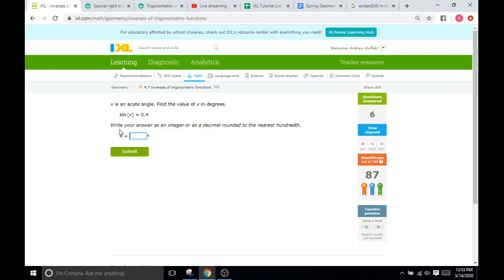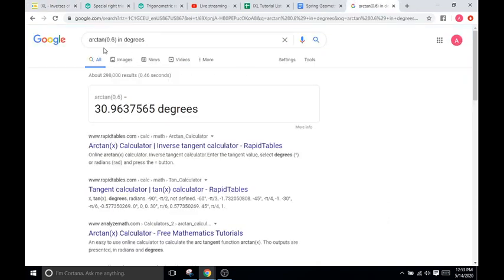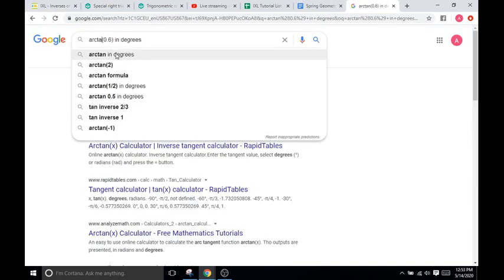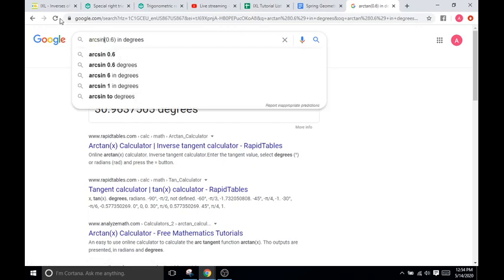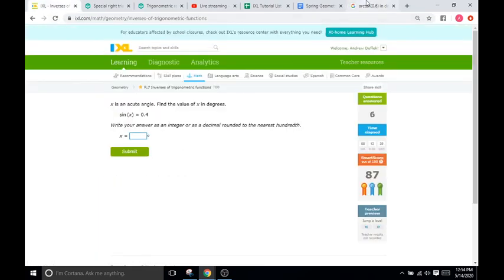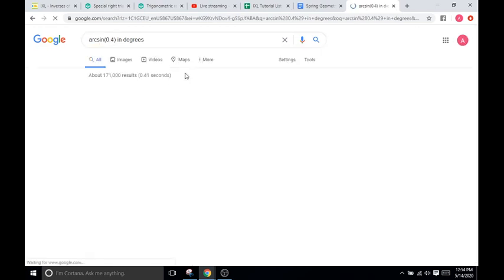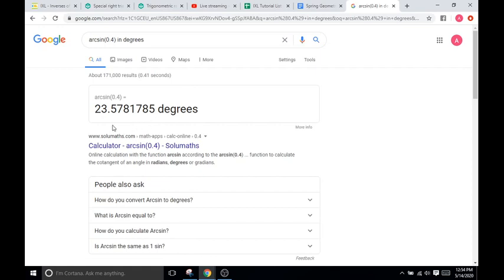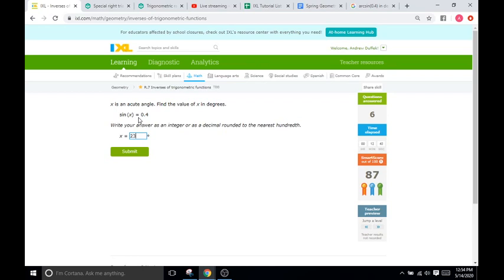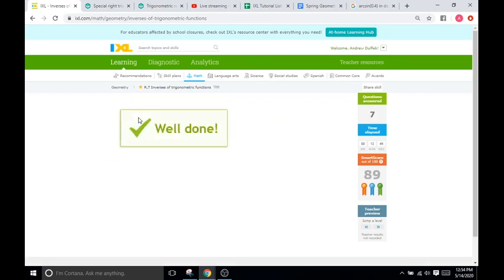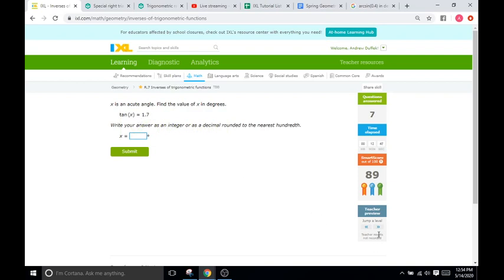We have one right here, sine of x equals 0.4. We're going to go back. We're going to type in arc sine, not sine, but arc sine of the value over there is 0.4. So we'll do 0.4 and then in degrees and it's going to be 23.58 degrees. And it's going to stick that way with the rest of the smart score all the way up to a hundred.